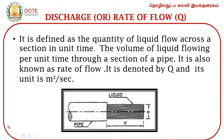What is discharge? Discharge is also called rate of flow. It is defined as the quantity of liquid flowing across a section in unit time — that is, the volume of flowing liquid per unit time through a section of a pipe. It is denoted by Q and its SI unit is meter cube per second.